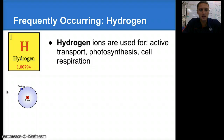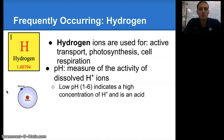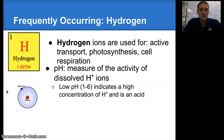Let's take a closer look at some of these frequently occurring elements, and the first one is hydrogen. Hydrogen ions are used for active transport, photosynthesis, and cell respiration. They can also be used as a measure of pH, and pH is a measure of the activity of dissolved hydrogen ions. A low pH — values of 1 to 6 — indicates a high concentration of hydrogen ions, and we call that acidic or an acid.